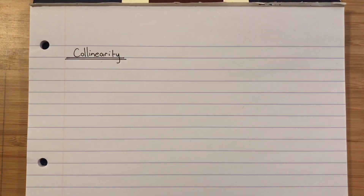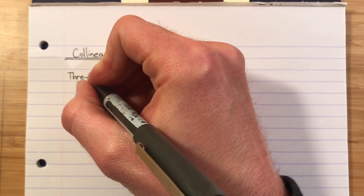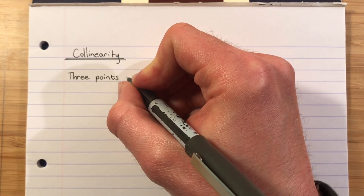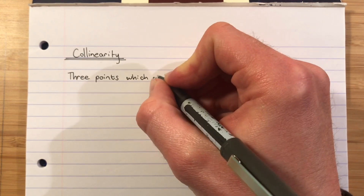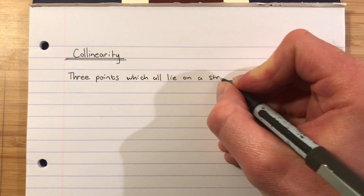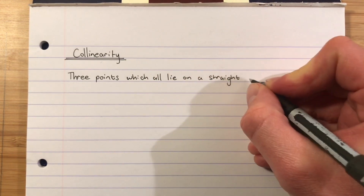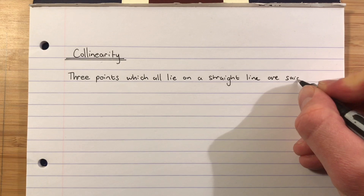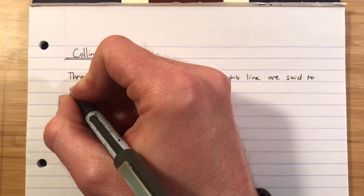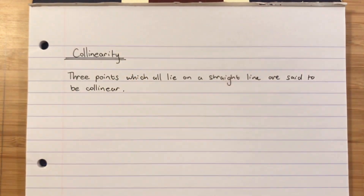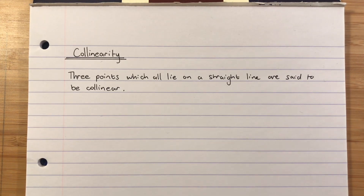We will write down the definition: three points which all lie on a straight line are said to be collinear.